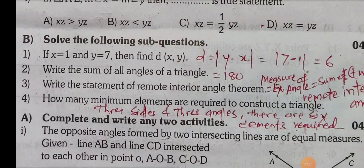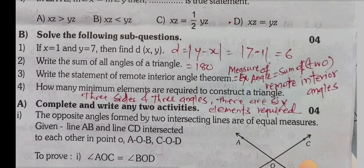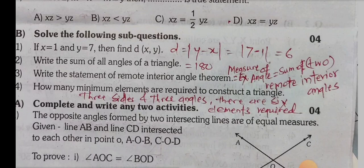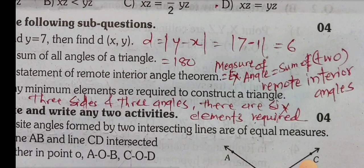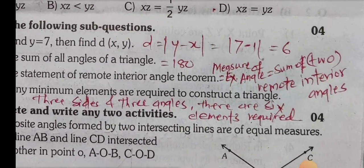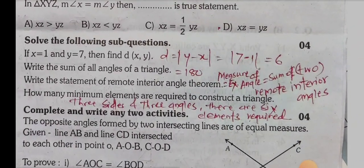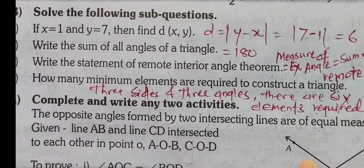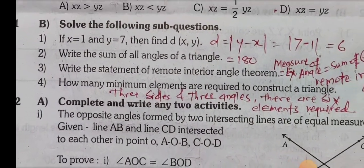Question 1b: Solve the following. Sub-question 1: If X equals 1 and Y equals 7, find distance XY. Distance XY equals Y minus X because coordinate of Y is greater than coordinate of X. Therefore 7 minus 1 equals 6. Distance XY equals 6.